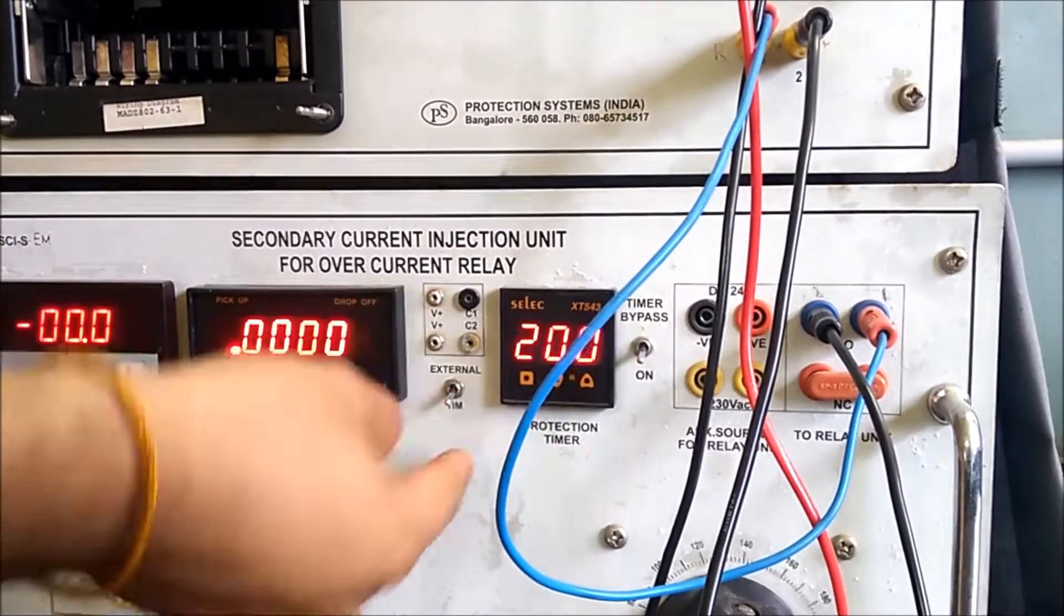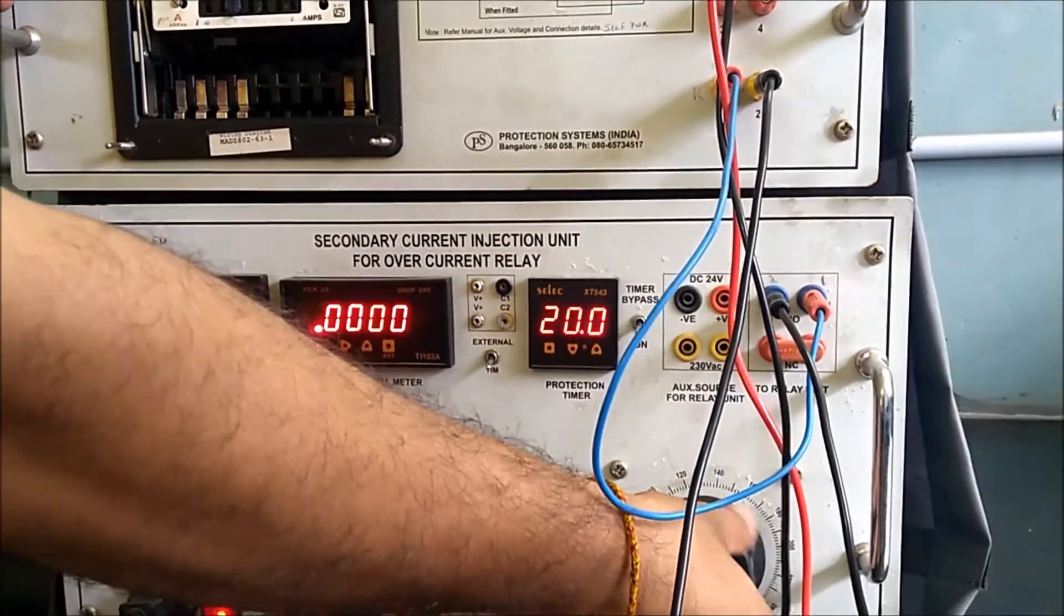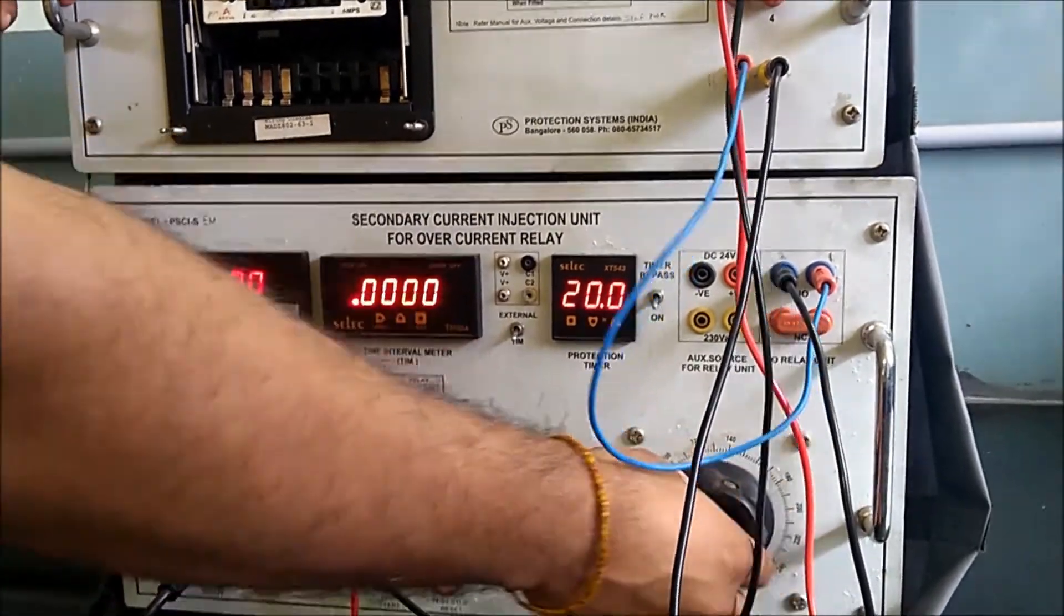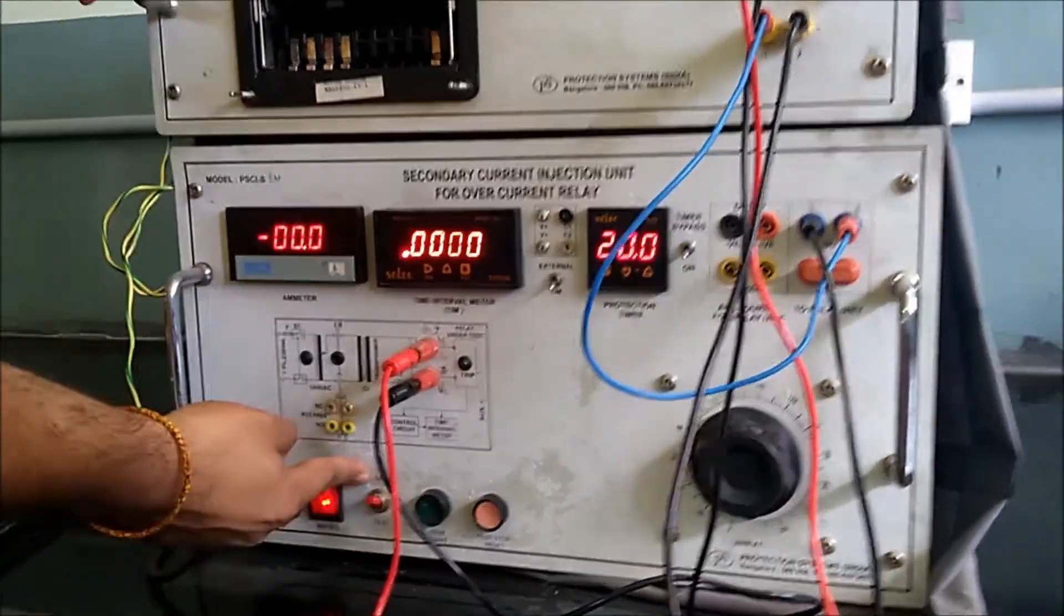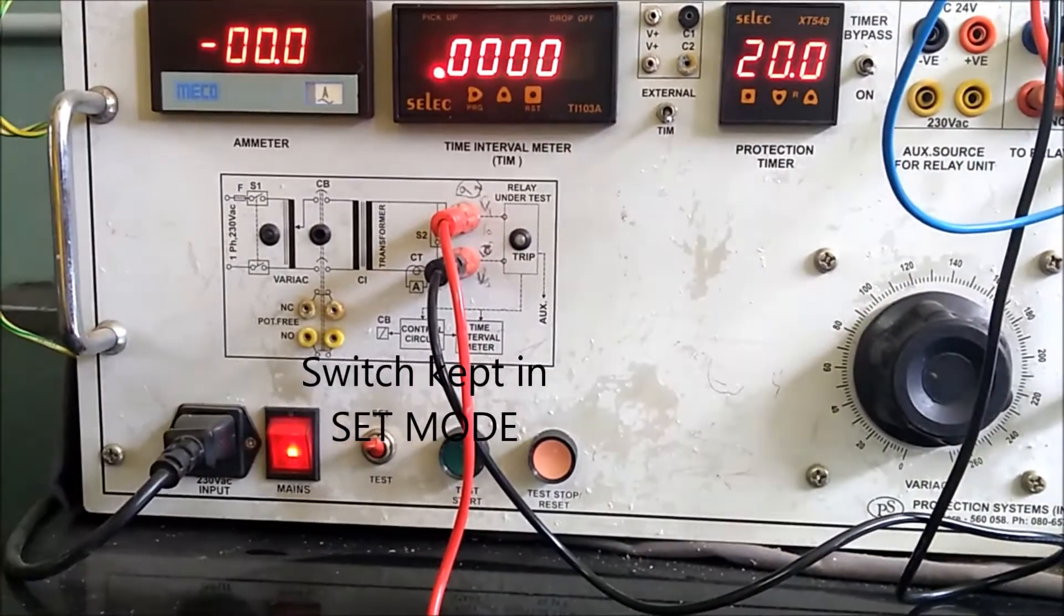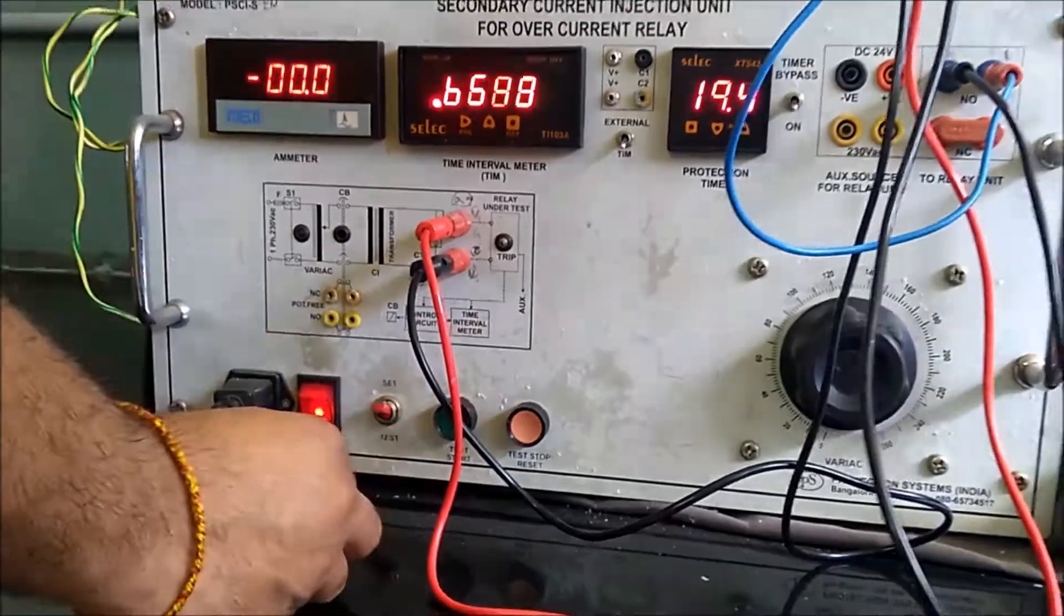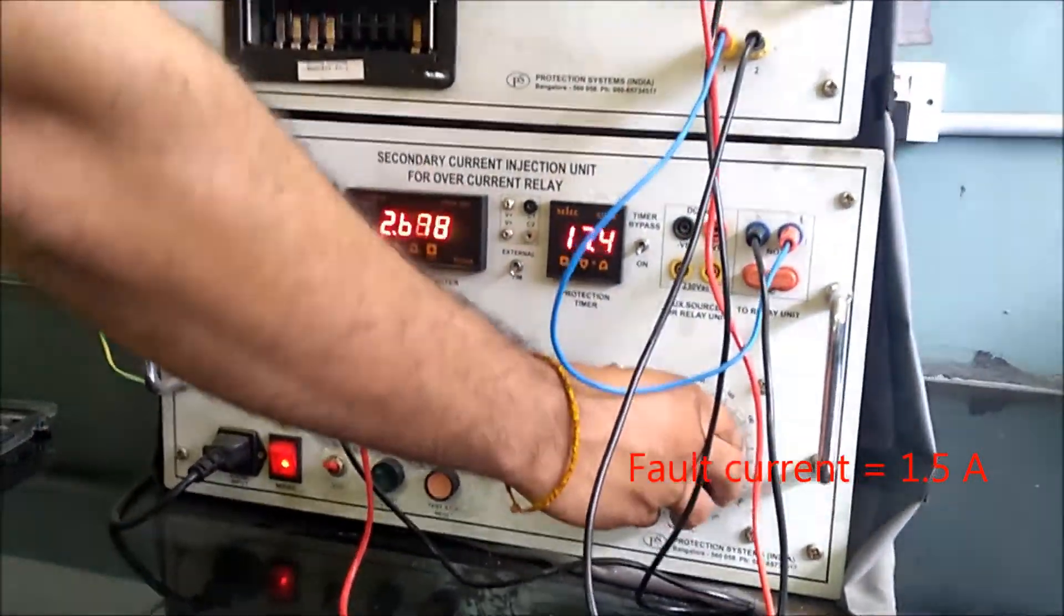Timer bypass circuit is on - if we do not keep it on then within 20 seconds the relay will trip and it is not possible for us to get the characteristic. Now we keep the switch in set mode, we press the stop button and reset, then we press the start button and now we slowly vary the variac and set the required fault current.